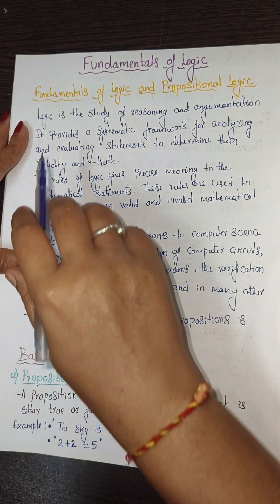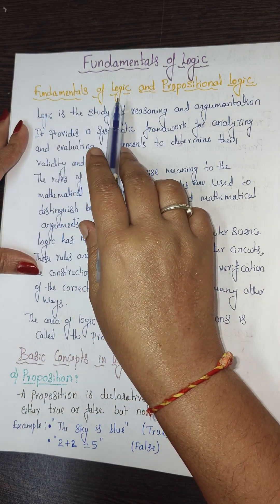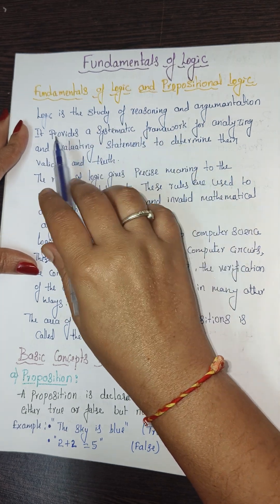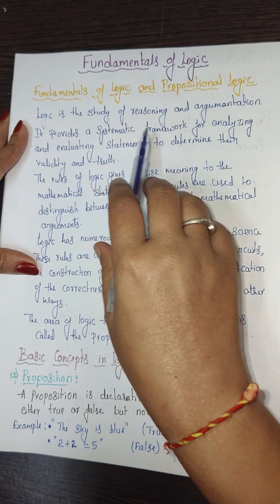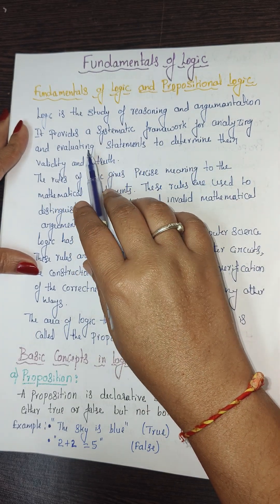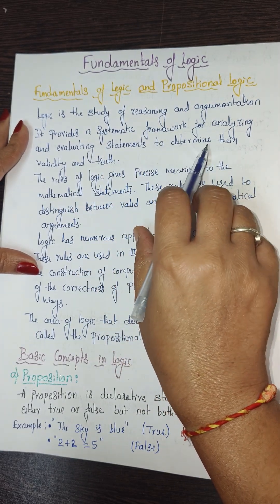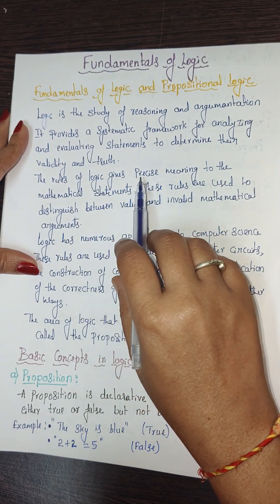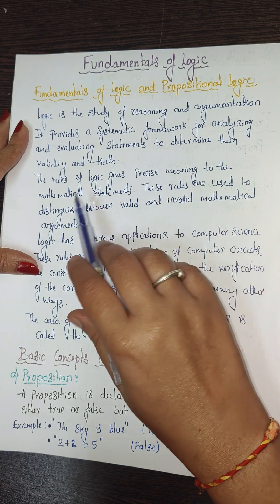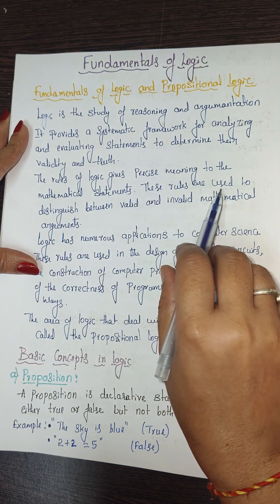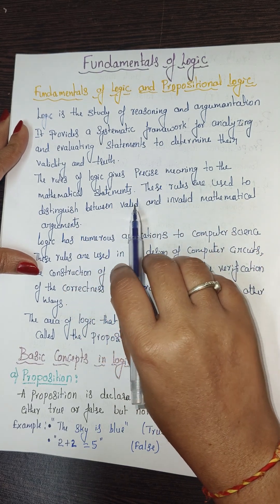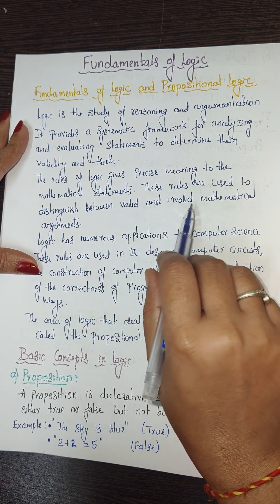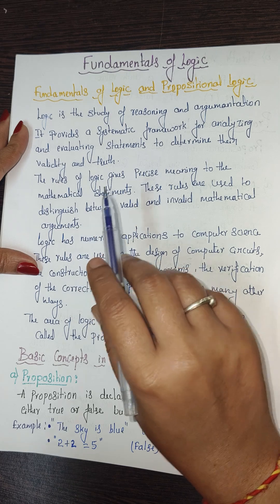First, we will see what is the meaning of fundamentals of logic. Logic is a study of reasoning and argumentation. It provides a systematic framework for analyzing and evaluating statements to determine their validity and truth. The rules of logic give precise meaning to mathematical statements and are used to distinguish between valid and invalid mathematical arguments.